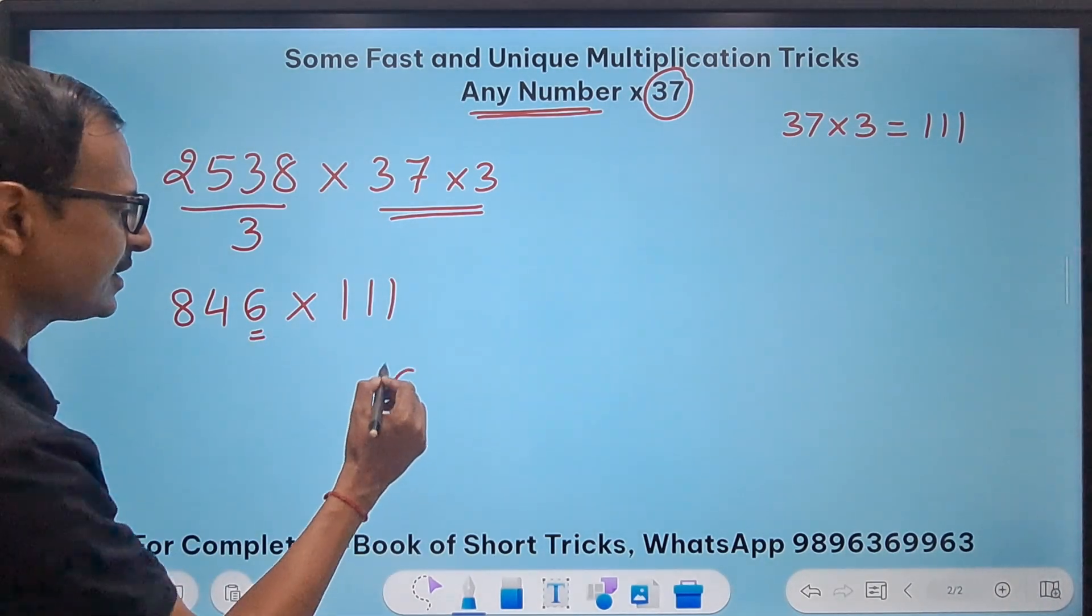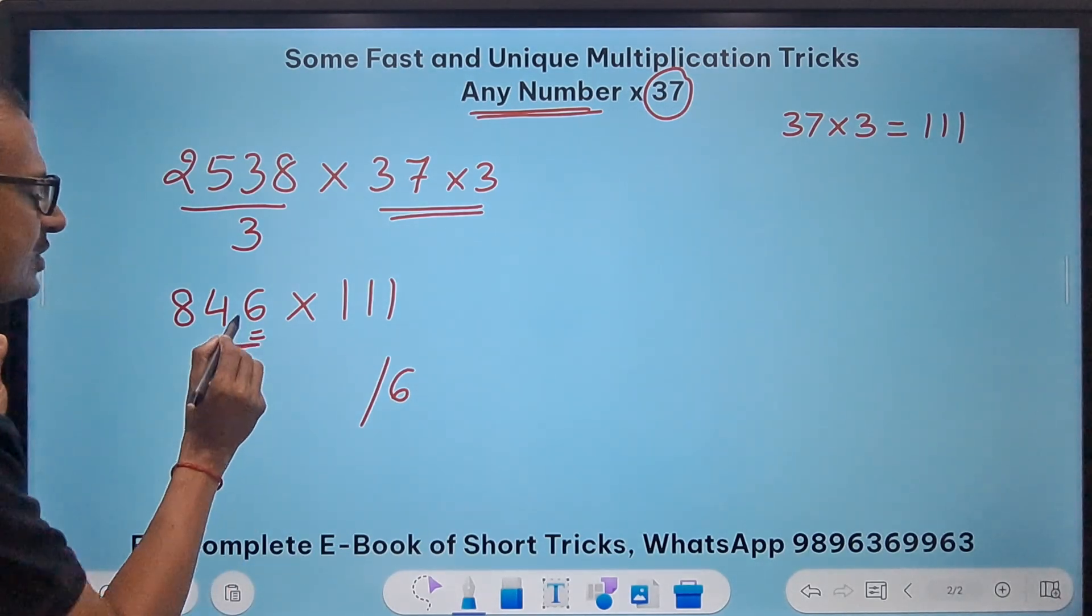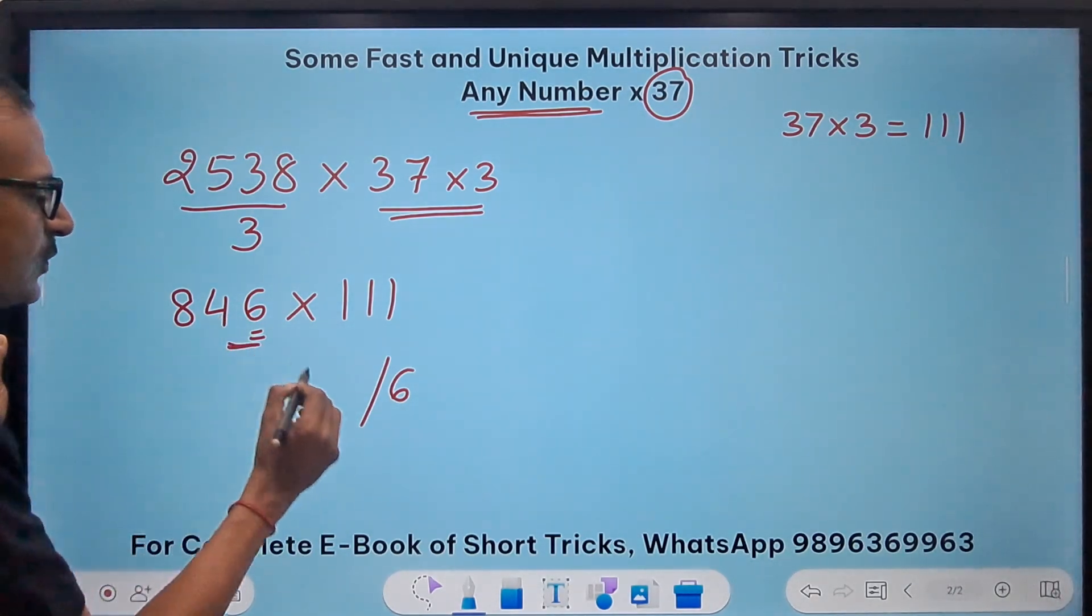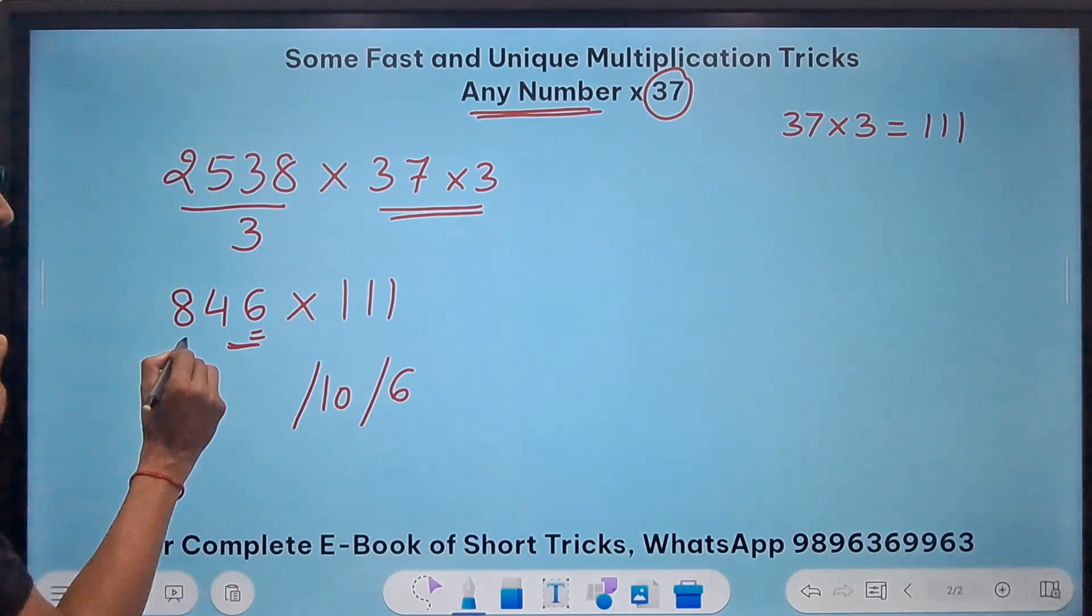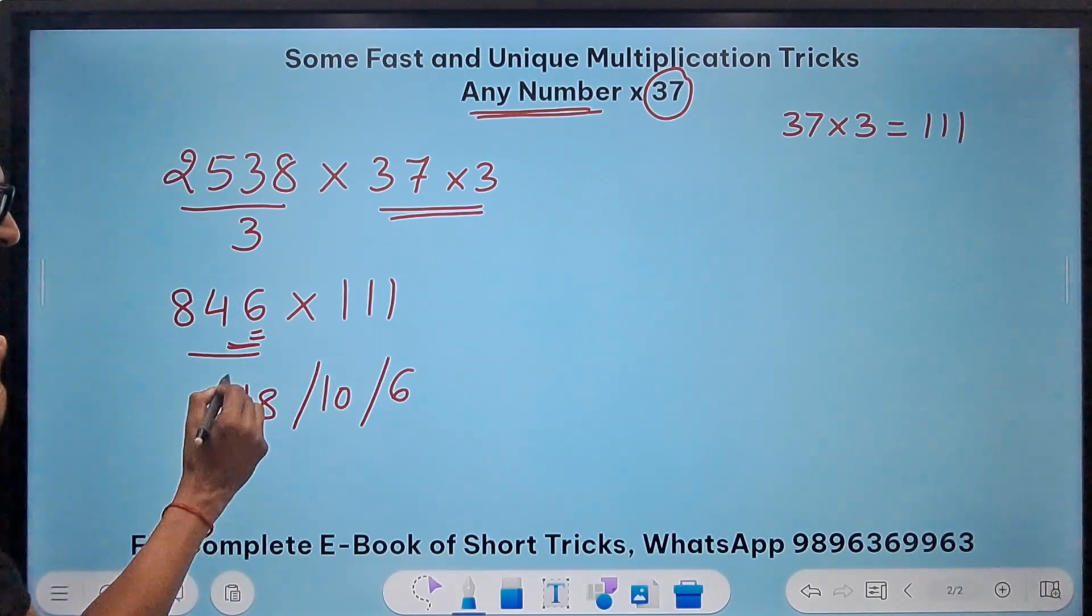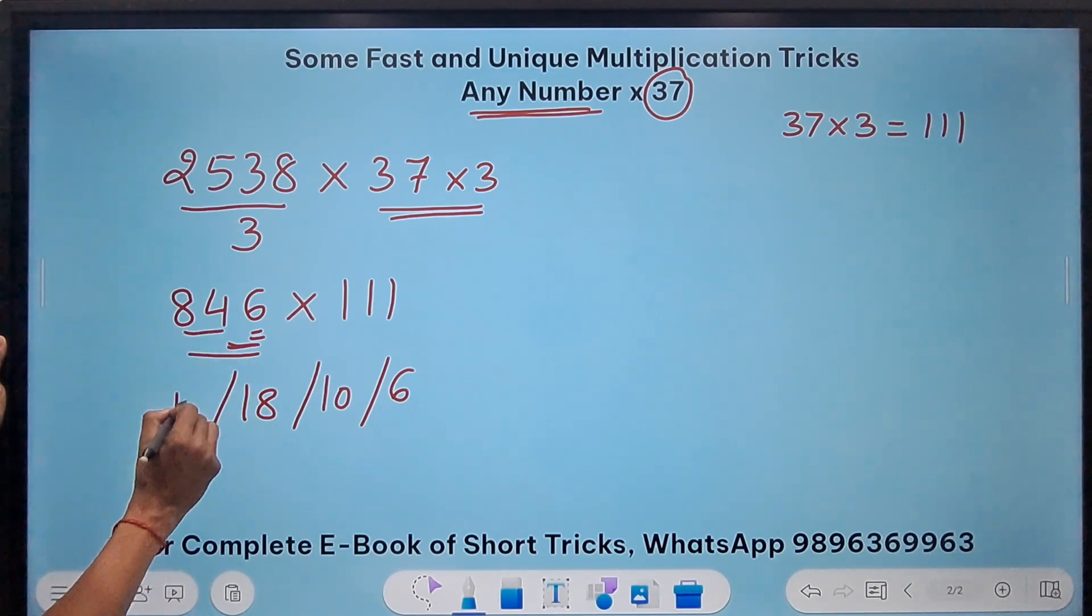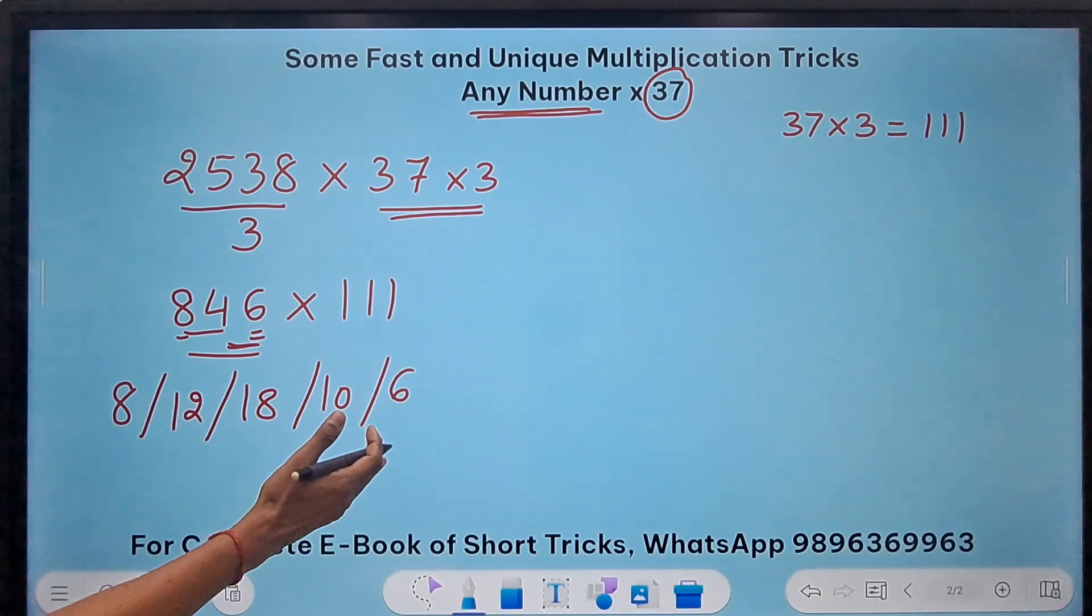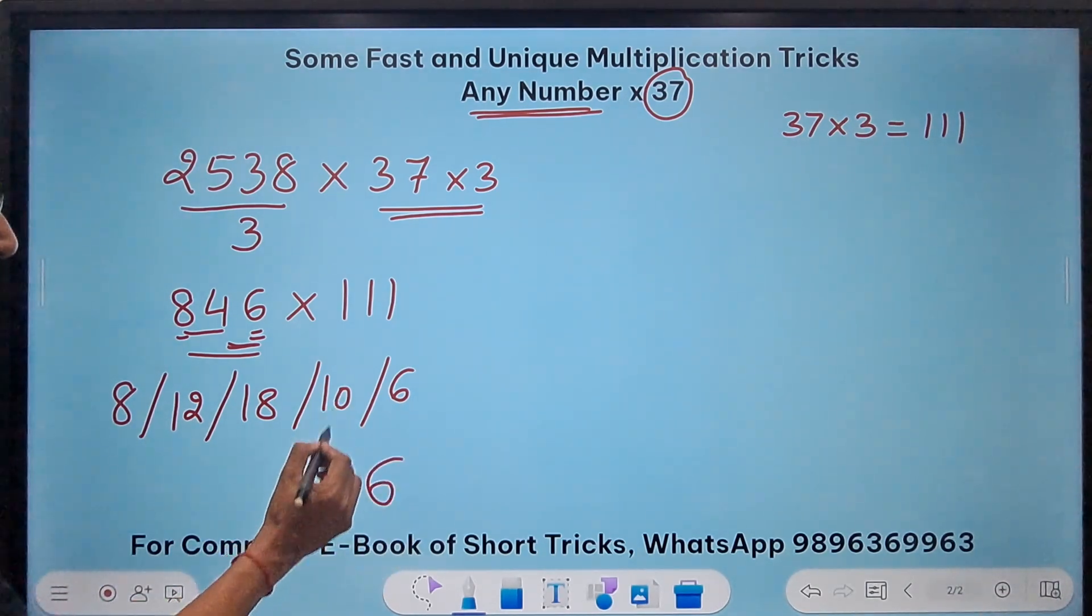Start from the unit digit 6 then take the two digits from the right hand side this is 6 plus 4, 10 and then take all three digits this is 18 and then first two digits 12 and the first digit 8.